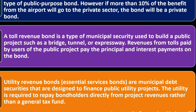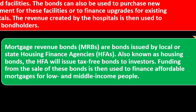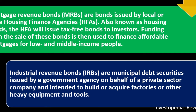The utility is required to repay bondholders directly from the project revenues rather than a general tax fund. A hospital revenue bond is a type of municipal bond intended to support the construction of a new hospital, nursing homes, or related facilities. The bonds can also be used to purchase new equipment or finance upgrades for existing hospitals, with the revenue created by the hospitals used to repay bondholders. Mortgage revenue bonds, or MRBs, are bonds issued by a local or state housing finance agency, also known as housing bonds, used to finance affordable mortgages for low- and middle-income people. Industrial revenue bonds, or IRBs, are municipal debt securities issued by a government agency on behalf of a private sector company, intended to build or acquire factories or other heavy equipment and tools.